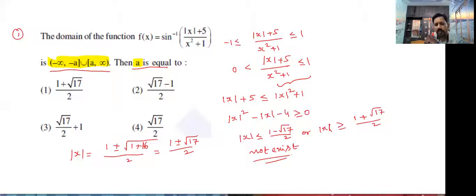Remove the modulus you'll get plus or minus, that means x is less than or equal to minus 1 plus root 17 by 2, or x is greater than or equal to 1 plus root 17 by 2.